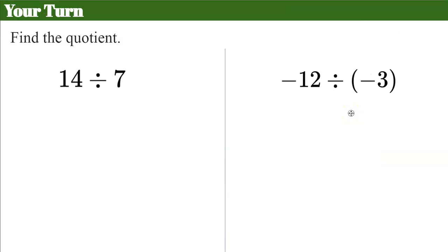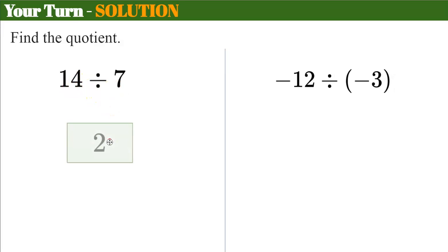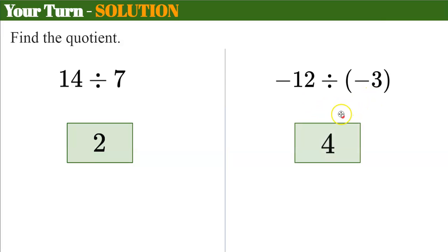Your turn — find the quotients, then come back. Welcome back. Same sign, both positive, so simply divide: your quotient is positive. 14 divided by 7 is 2. Here I have two negatives: negative 12 divided by negative 3, same sign, positive quotient — negative 12 divided by negative 3 is positive 4.